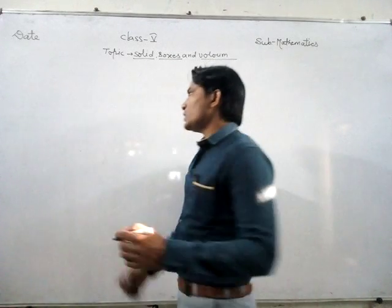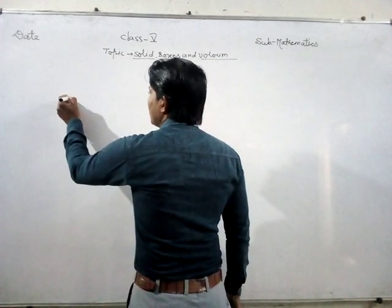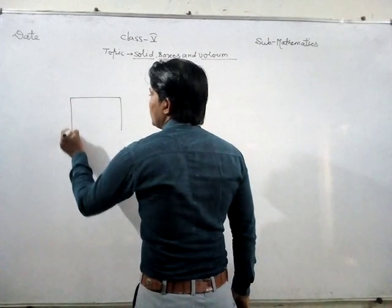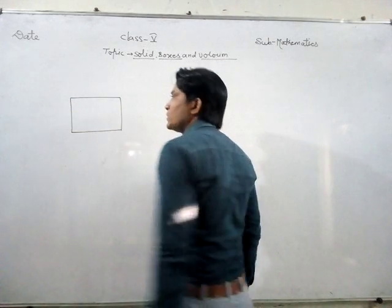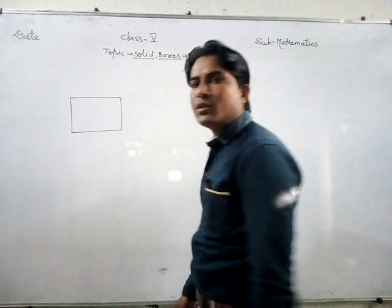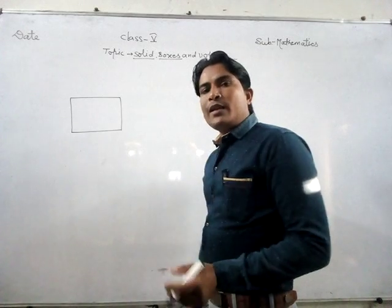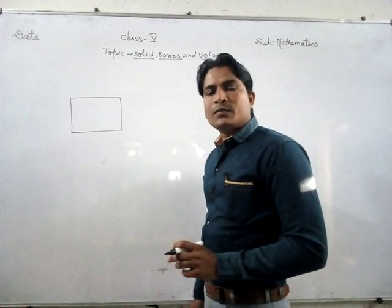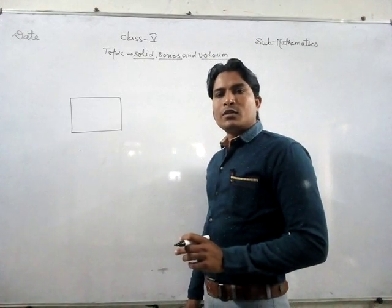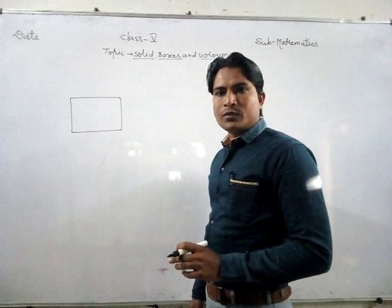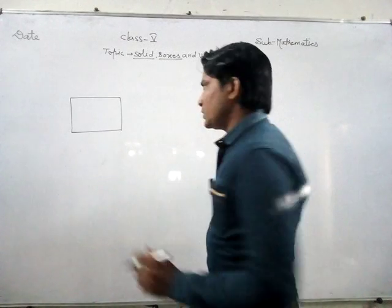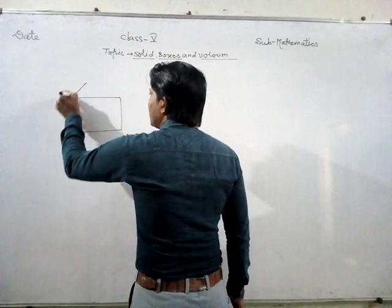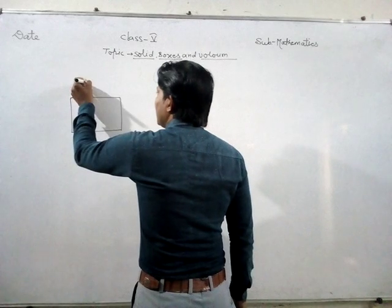So first of all, we will discuss about a cuboid. Suppose a cuboid is given to you — a solid box is given to you. For example, a matchbox. A matchbox is like a cuboid. Similarly, there are many types of examples we discuss here.